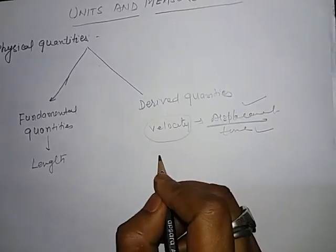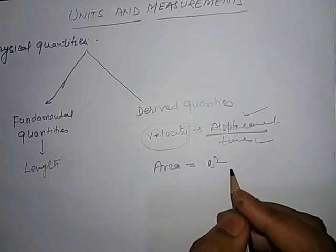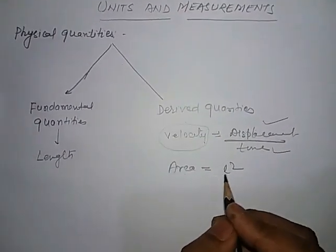Similarly, area is length squared, or side squared, or a times b. This means area depends on length.